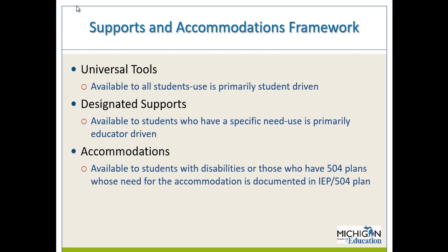An example of a designated support could be oral translation of content into the student's native language. The third tier is accommodations — available to students with disabilities or those with 504 plans whose need is documented on the IEP or 504 plan. The intent is to make sure students who need something as outlined in their IEP get it during the assessment.